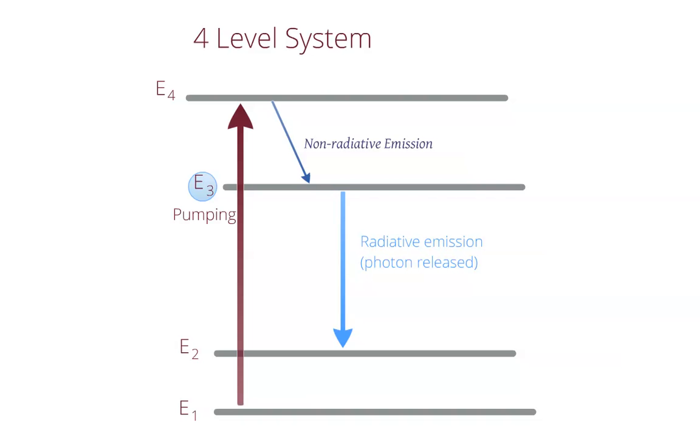This is solved by using a four-level system. In this case, the system is pumped to the highest level E4 and quickly decays and accumulates in the E3 level, as in the three-level laser. This accumulation of atoms in the higher level causes the radiative transition to E2 and release of photons, amplifying the beam.